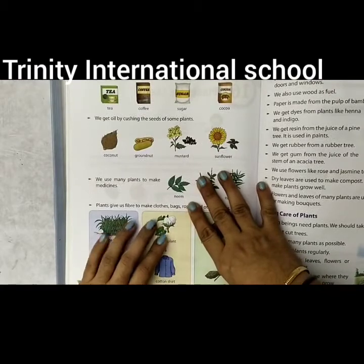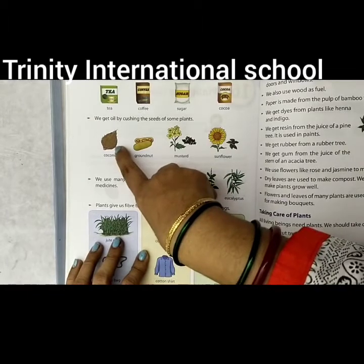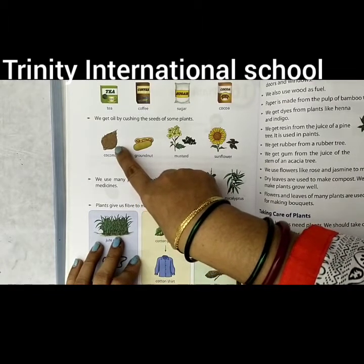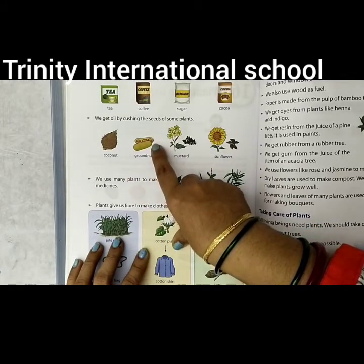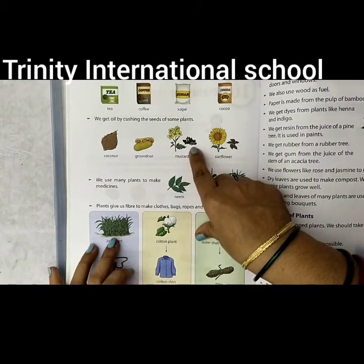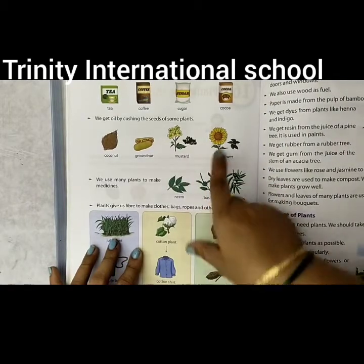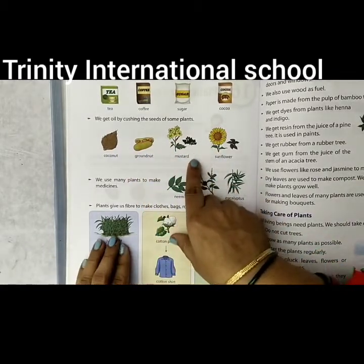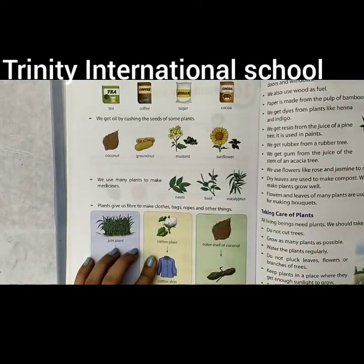We also get oil from plants by crushing the seeds. Coconut is a fruit from which we can get oil. Groundnut also gives us oil. Mustard seed is also giving us oil, and sunflower is also giving us oil. These seeds have to be crushed so that they give you oil.